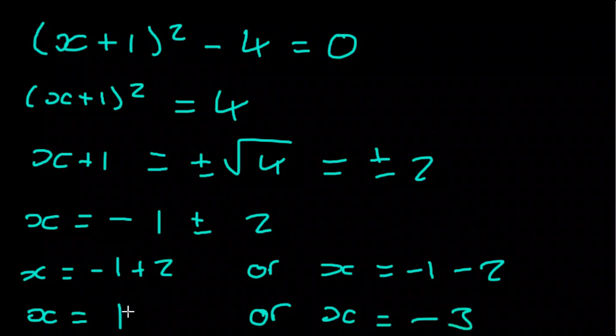So this is x is equal to 1 or x is equal to minus 3. And we can double check this by plugging these back in. We plug 1 back in, we get 1 plus 1 squared, that's 4 minus 4 is equal to 0. Or we get minus 3 plus 1 squared, that's minus 2 squared, that's 4 minus 4 is equal to 0. So we know these are our solutions.